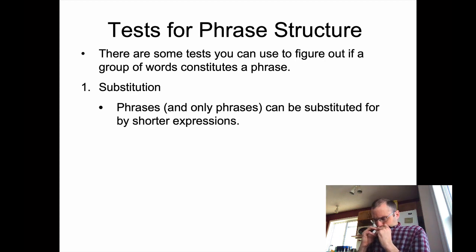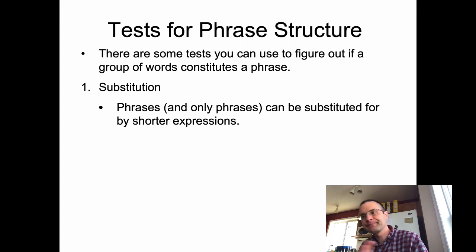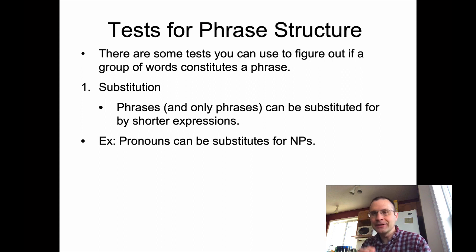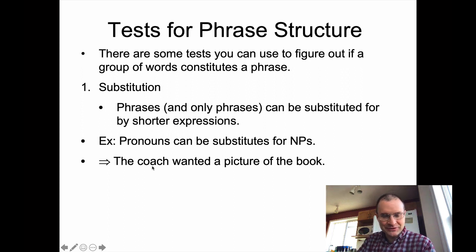The first test is called substitution, where you can substitute a whole phrase or replace it in a sentence with a shorter expression. You can only do that with shorter expressions of the same type of phrase as the original. A pronoun is like a type of noun, and you can use pronouns to substitute noun phrases. For example: 'the coach wanted a picture of the book' — there are a lot of nouns in that short sentence: coach, picture, and book.